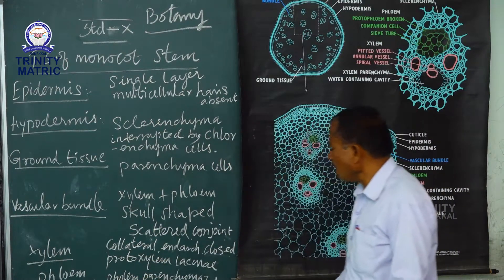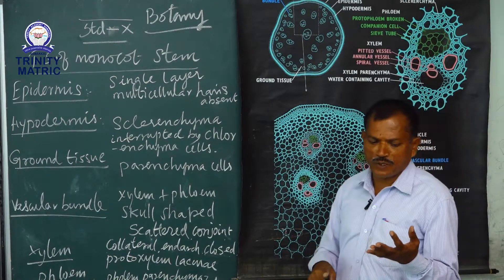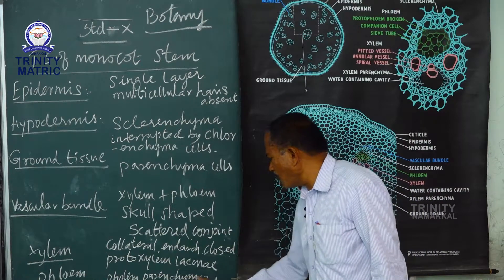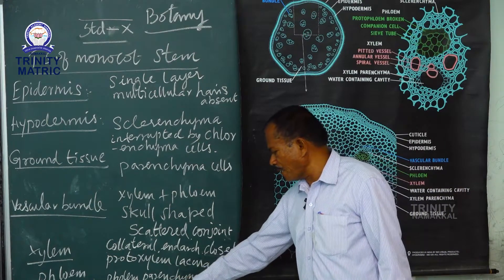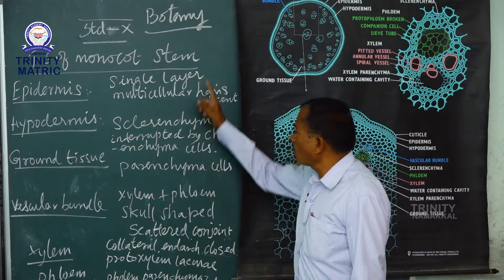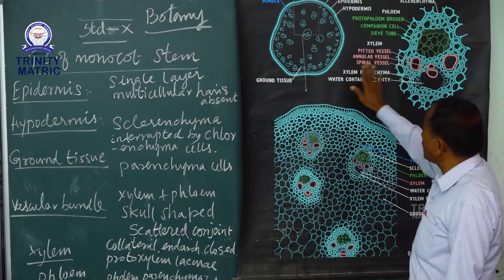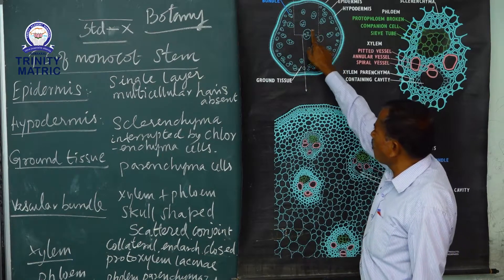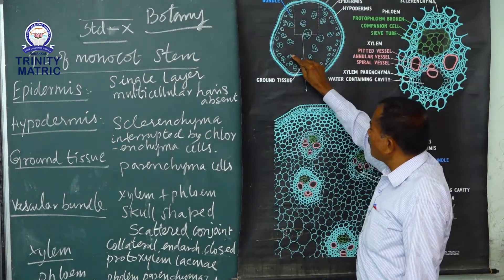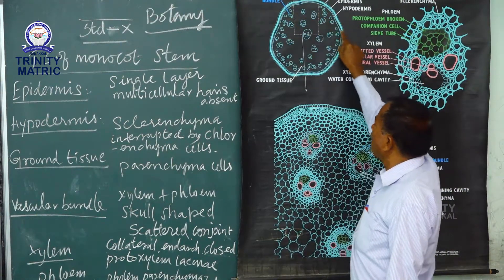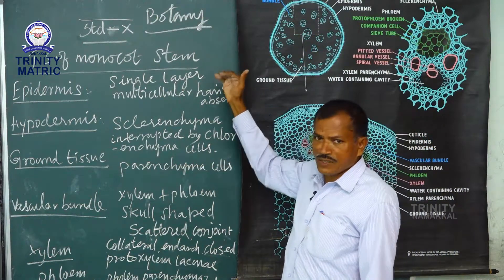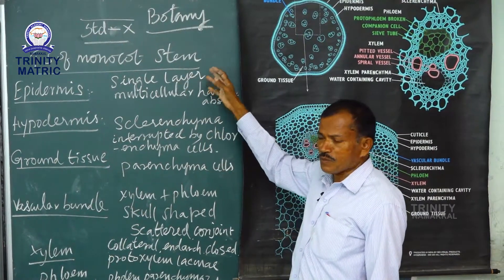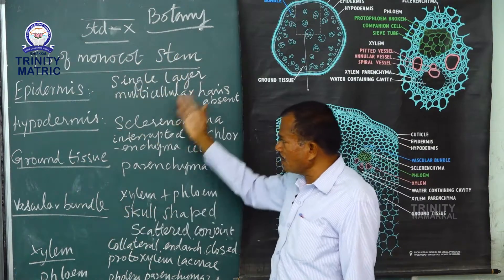Next, phloem. Phloem normally consists of sieve tubes, companion cells, phloem parenchyma, and phloem fibers, but in the monocot stem, phloem parenchyma and phloem fibers are absent. Pith is also generally absent. The mature vascular bundles are located in the center of the stem, while the smaller, first-formed vascular bundles are arranged in the peripheral layer.